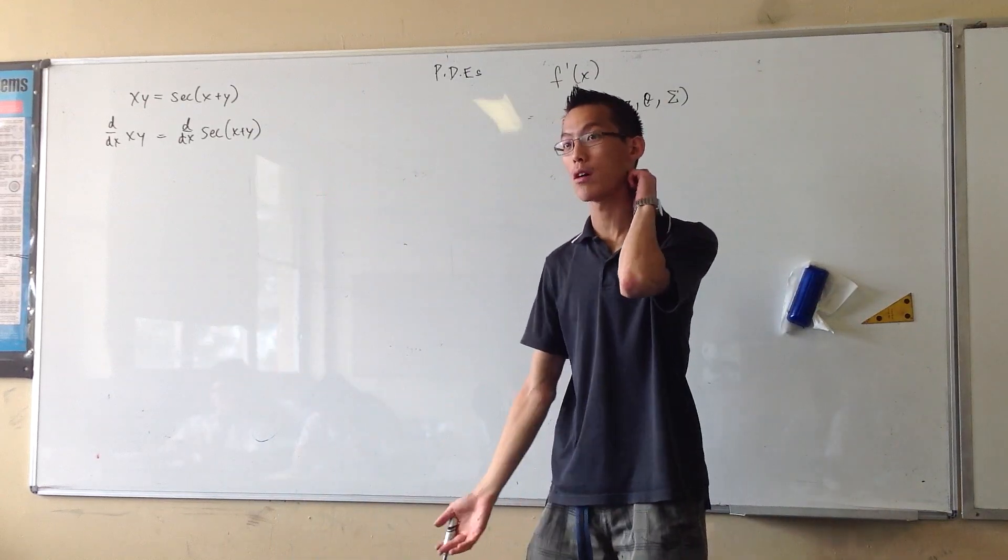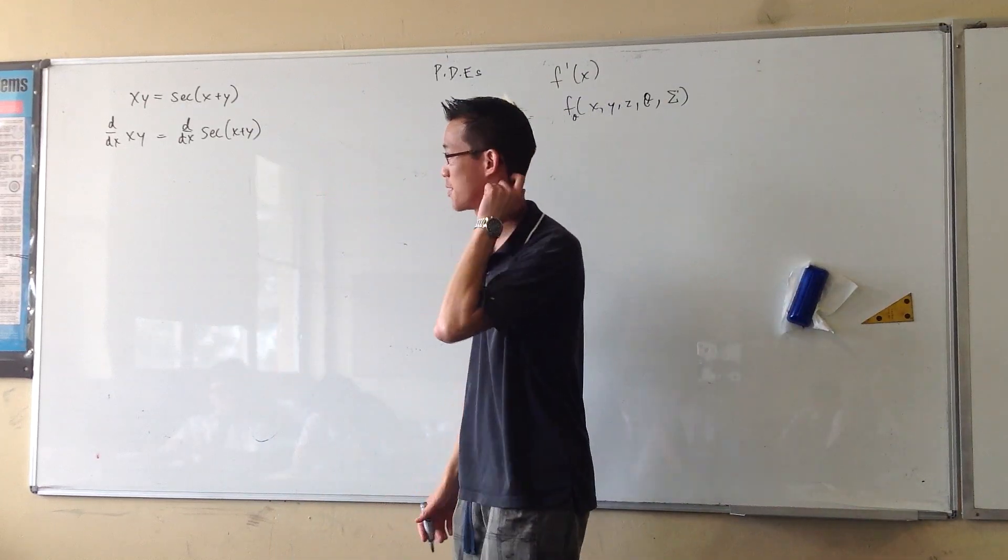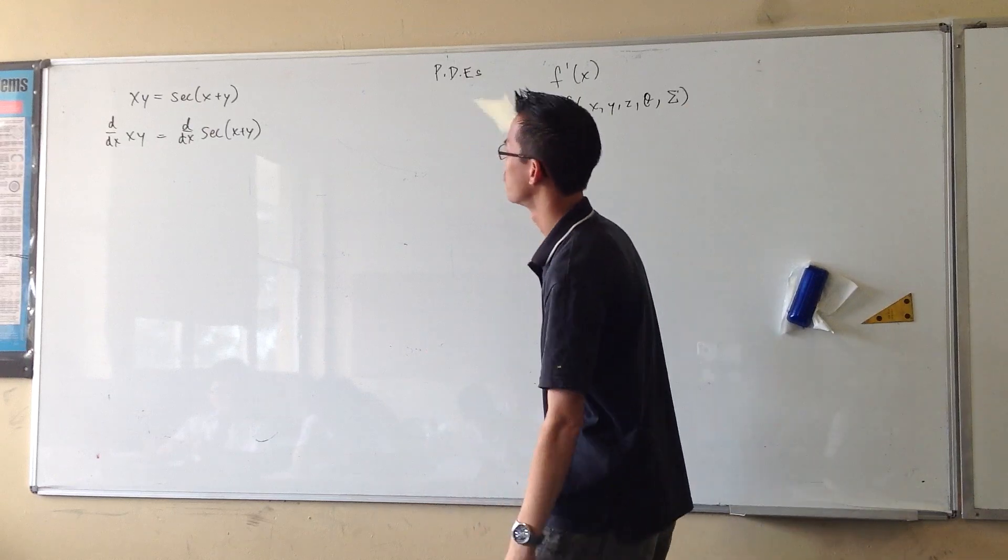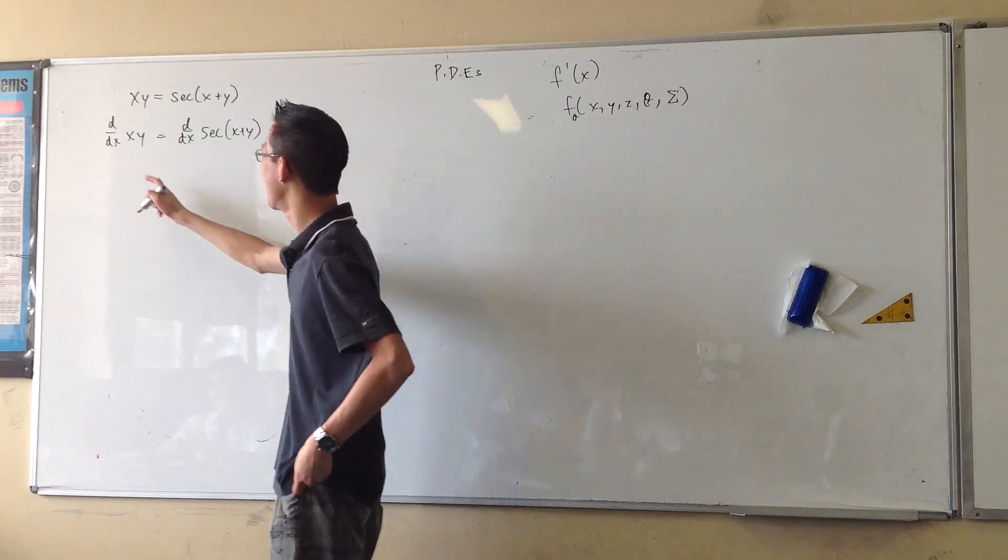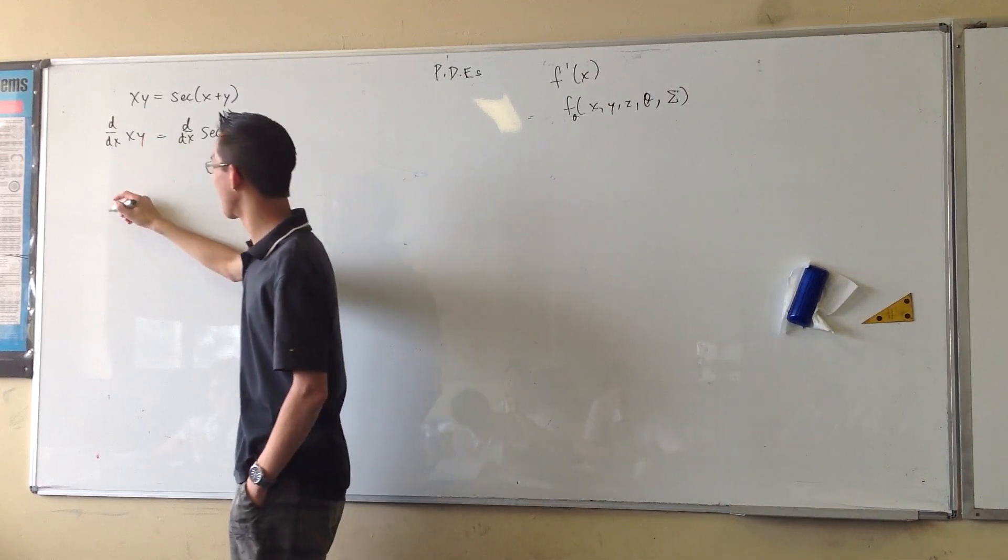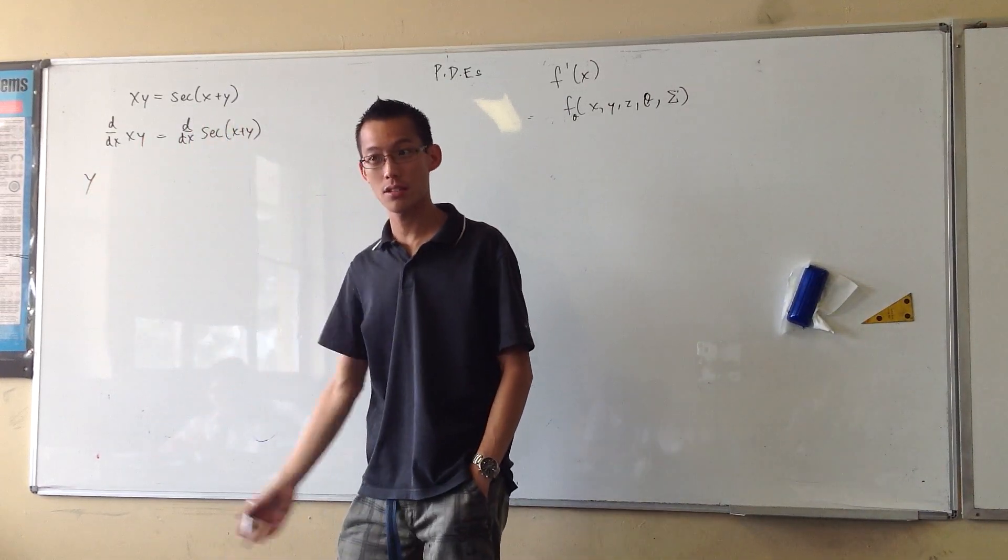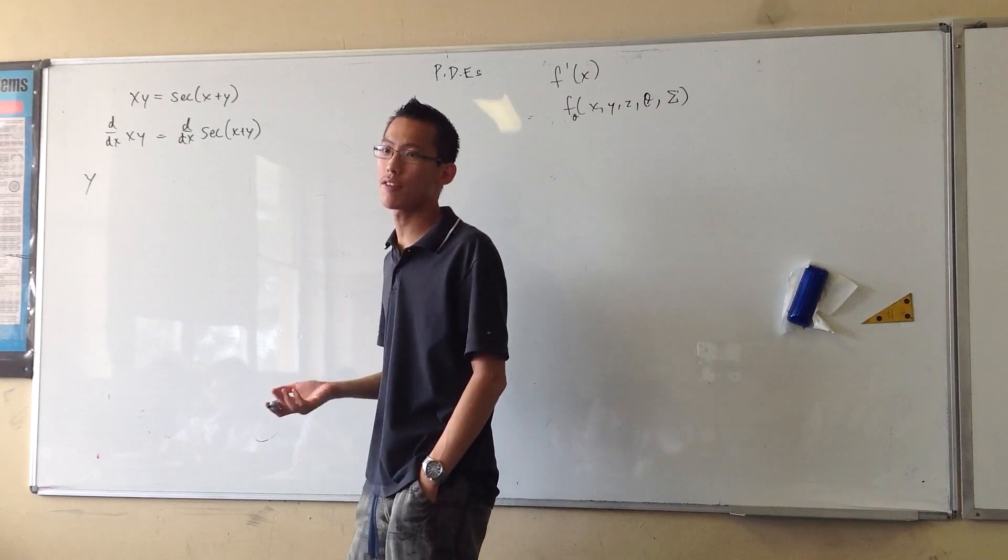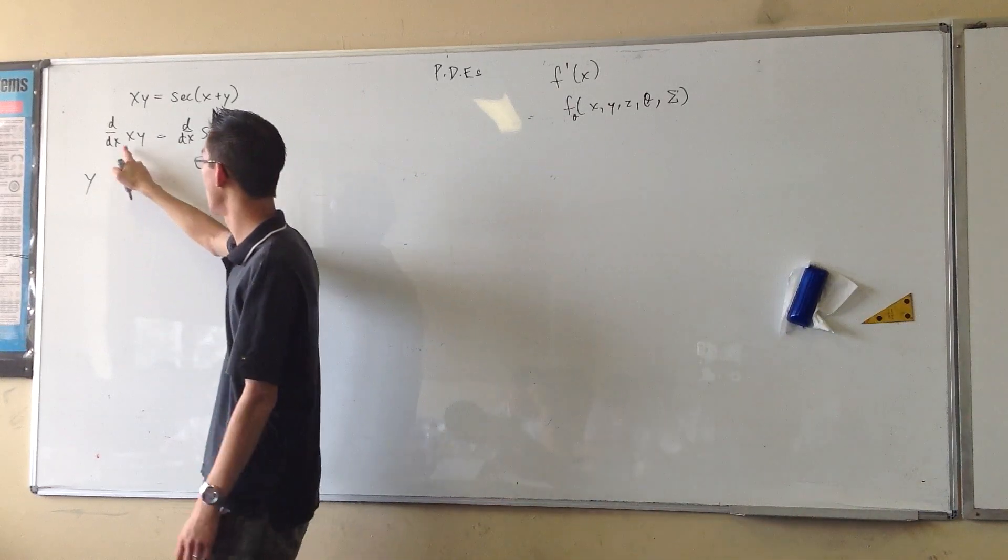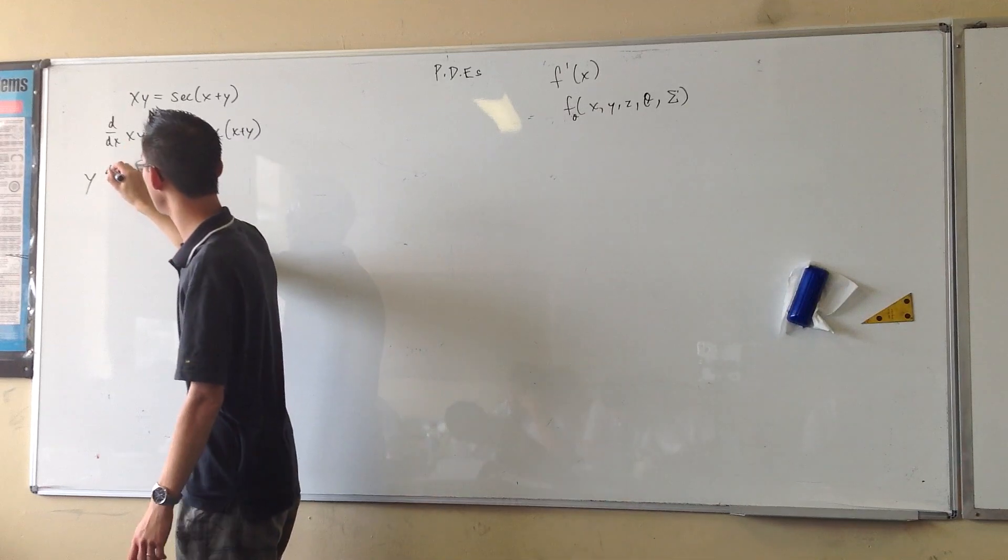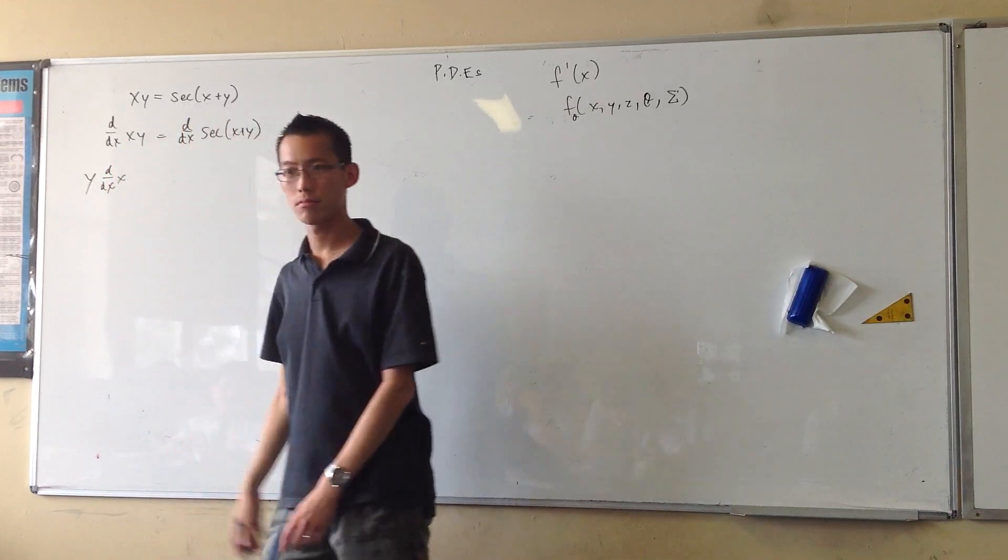Now on the left hand side I have a product, right? So this is just a product rule, or an xy. So it is, right? So you take the second function, y, it's unchanged. You differentiate the first function, which is d/dx of x.